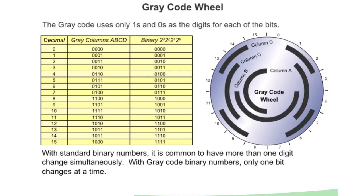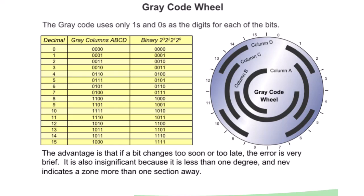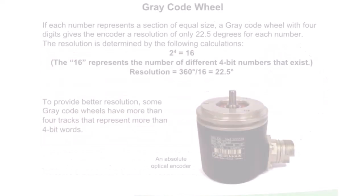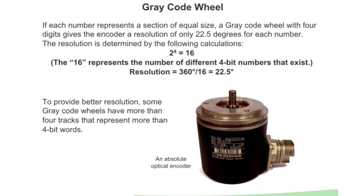With gray code binary numbers, only one bit changes at a time. The advantage is that if a bit changes too soon or too late, the error is very brief. It is also insignificant because it is less than one degree and never indicates a zone more than one section away.